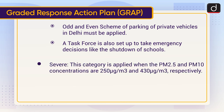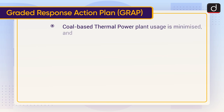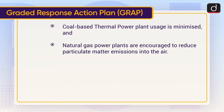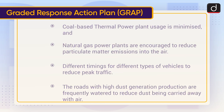The second GRAP category is Severe, applied when PM2.5 concentrations reach 250 micrograms per cubic meter and PM10 reaches 430 micrograms per cubic meter. Measures include: closing stone crusher industries, brick kilns, hot mix plants; minimizing coal-based thermal power plant usage while encouraging natural gas power plants; implementing different timings for different types of vehicles to reduce peak traffic; and frequently watering roads with high dust generation to reduce dust in the air.